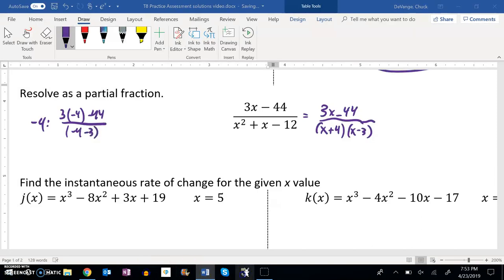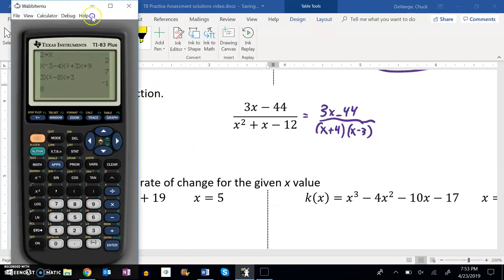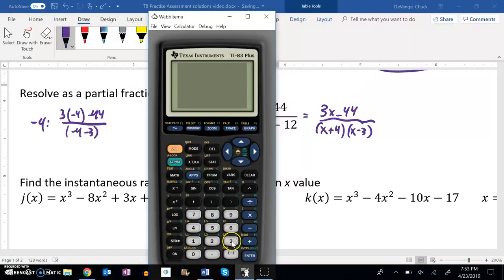And the way that I like to do this is I like to do it on my calculator. So store negative 4, store it in x. So now x equals negative 4. And then just enter in this.